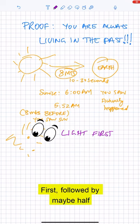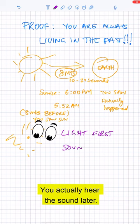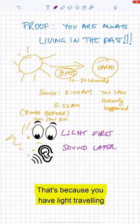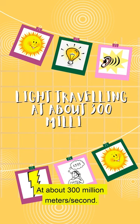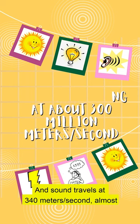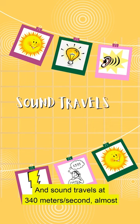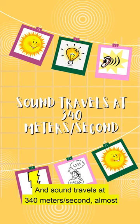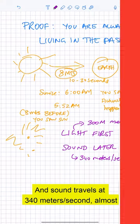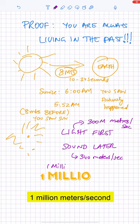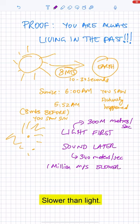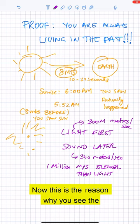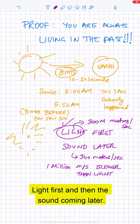Followed by maybe a half a second or a second later you will actually hear the sound later. That's because you have light traveling at about 300 million meters per second and sound travels at 340 meters per second, almost one million meters per second slower than light.